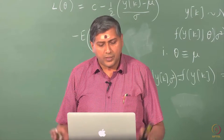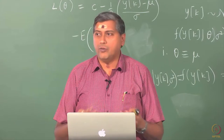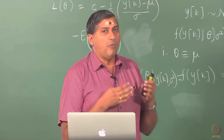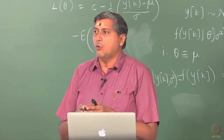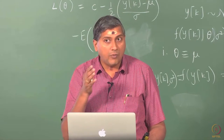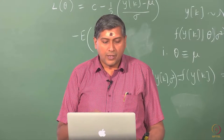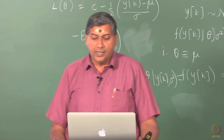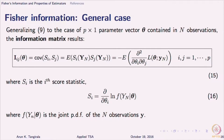How do you calculate this information matrix? It is a straightforward extension of what we have seen earlier. Earlier we said the information is the variance of the score, and the score is the derivative of the likelihood with respect to theta. But now I have many parameters, so I have to turn to partial derivatives. As seen in equation 15, the ijth element of the information matrix is the negative expectation of the second partial derivative.